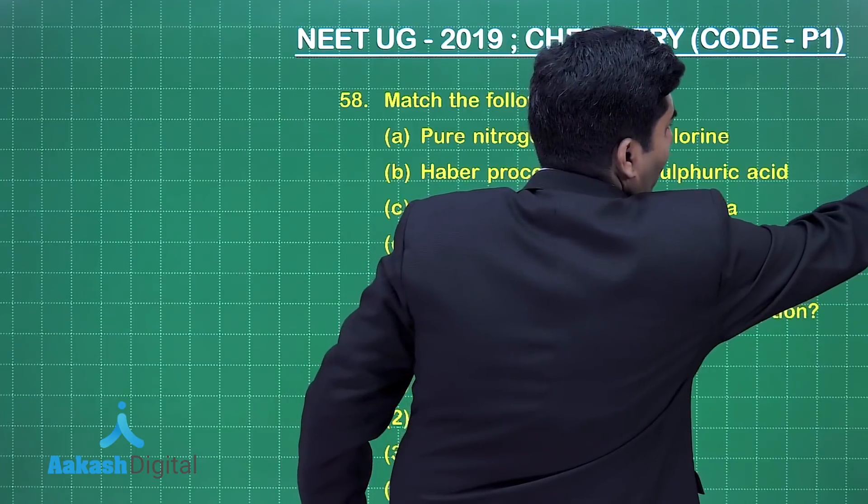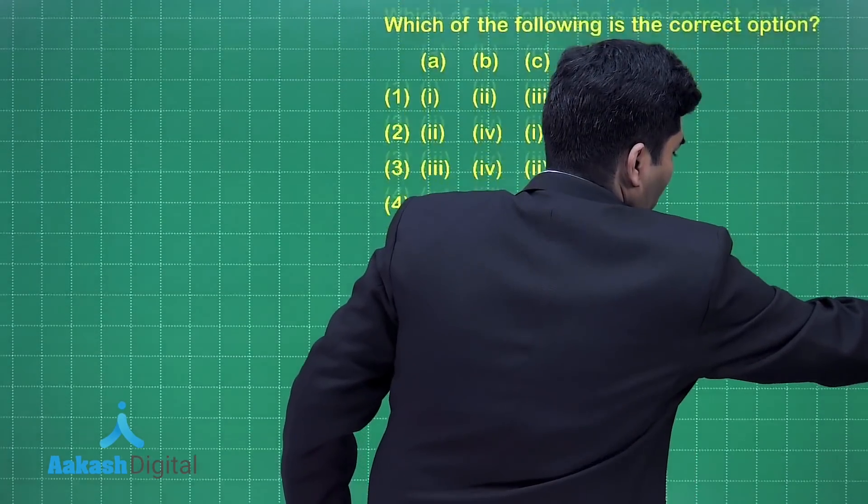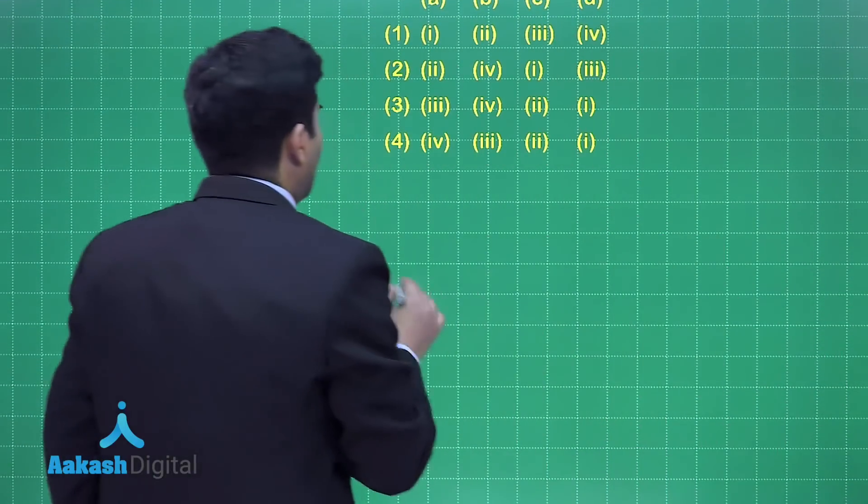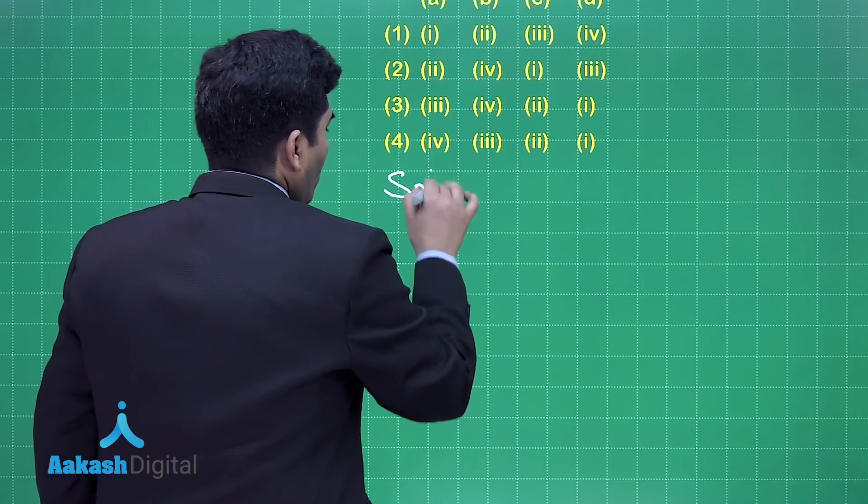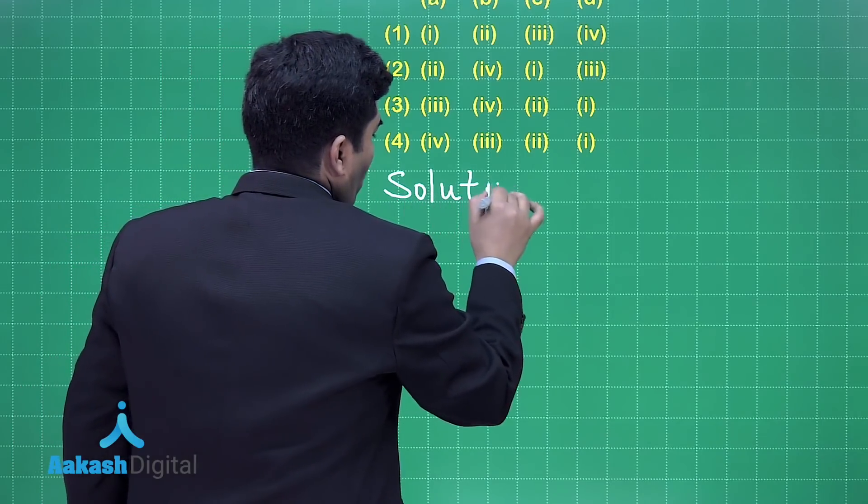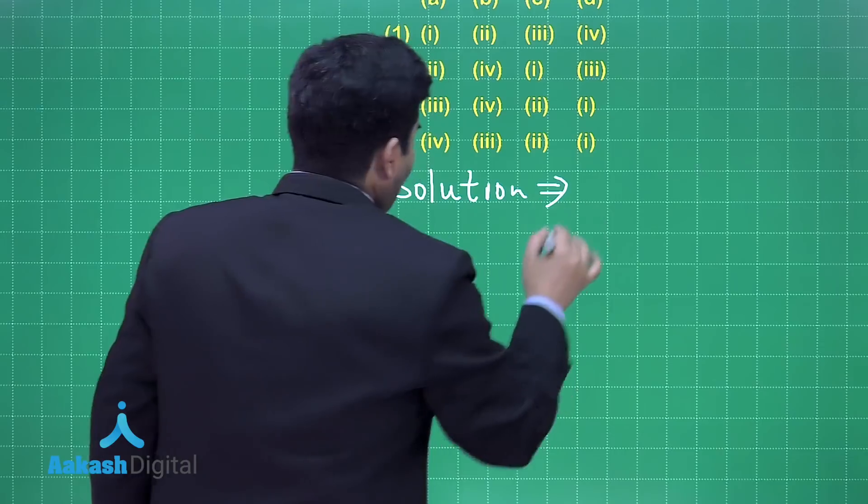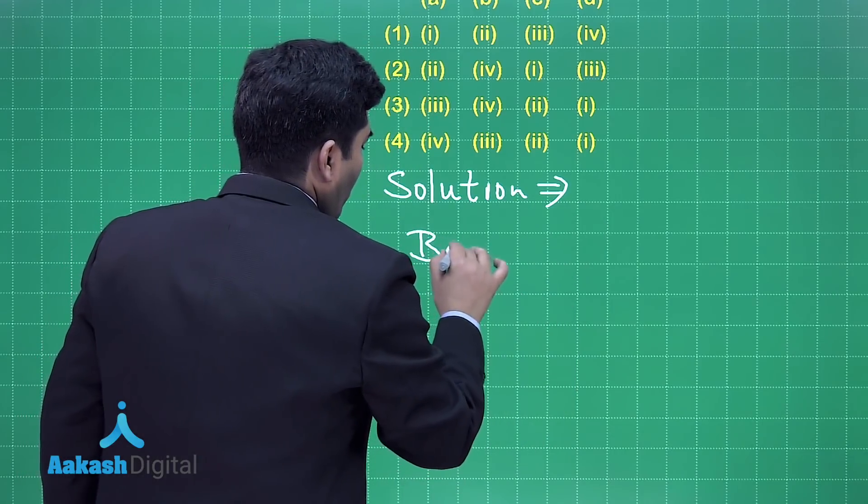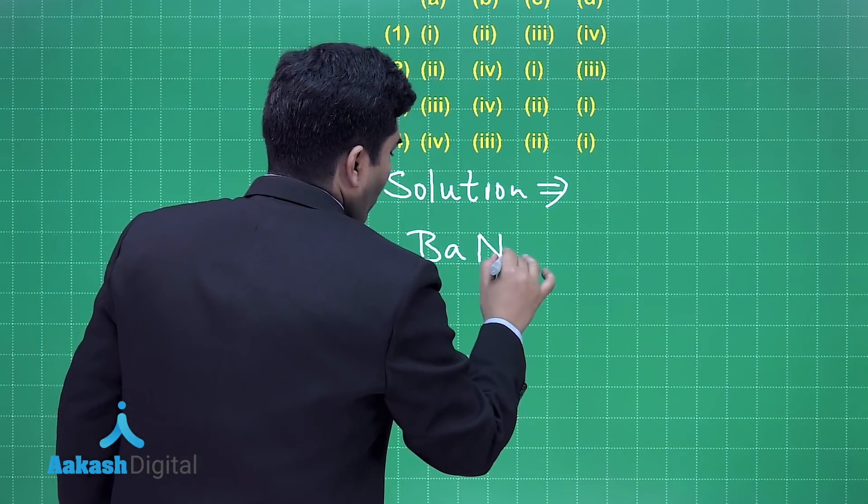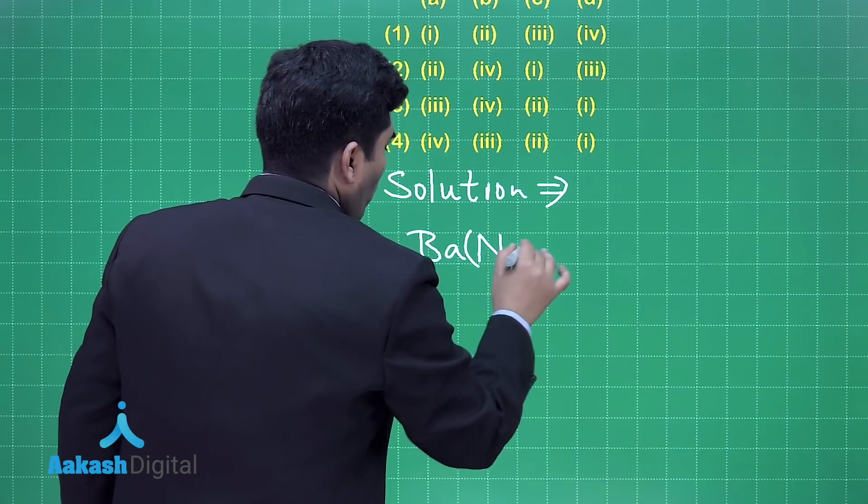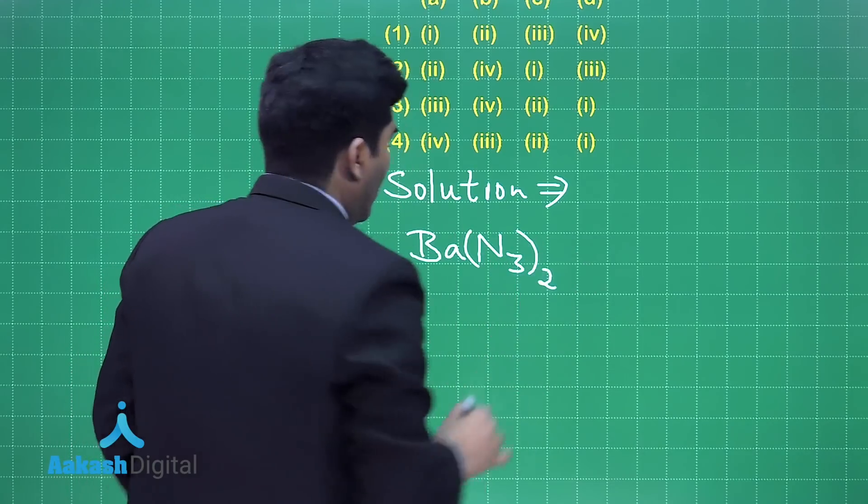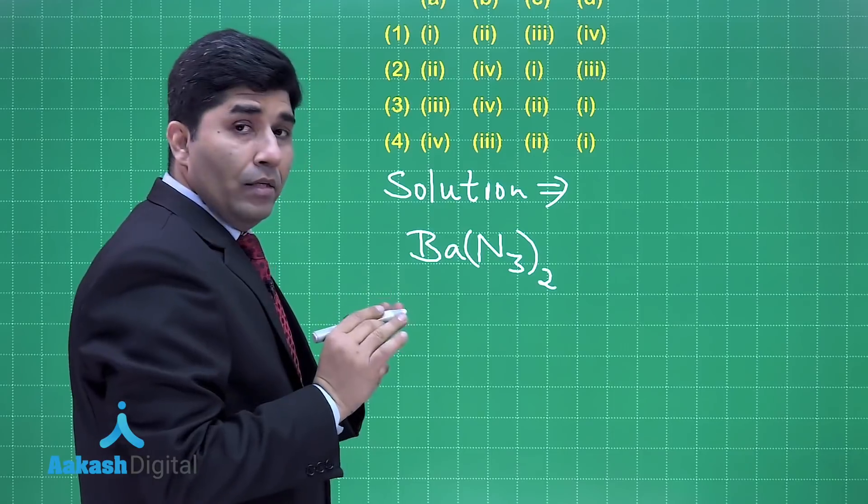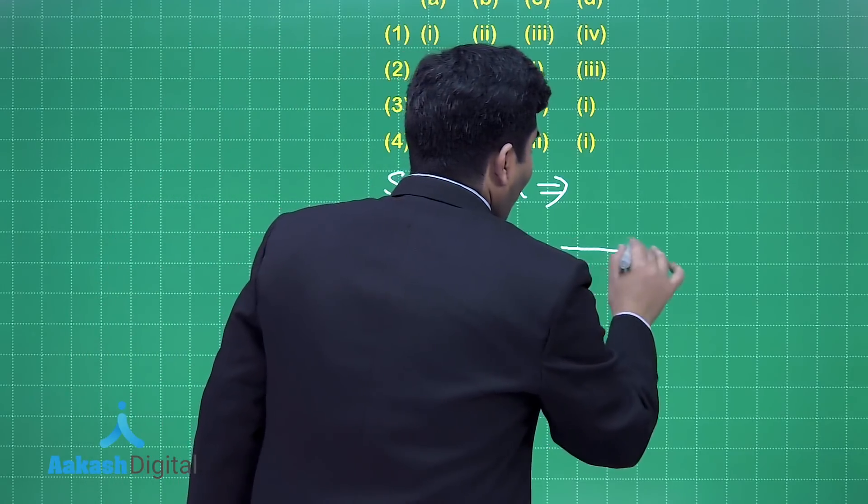Nitrogen can be prepared by heating barium azide. Let's begin with the solution. The formula is Ba(N3)2 - this is barium azide. When we heat it, we get barium plus 3N2.